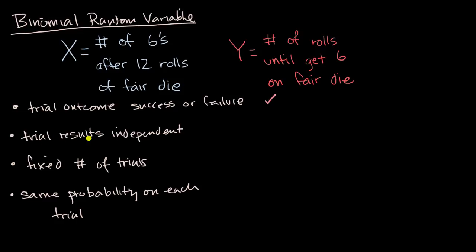Are the results of each trial independent? Well, whether I get a six on the first roll, or the second roll, or the third roll, or the fourth roll, the probabilities shouldn't be dependent on whether I did or didn't get a six on a previous roll. So we have the independence.